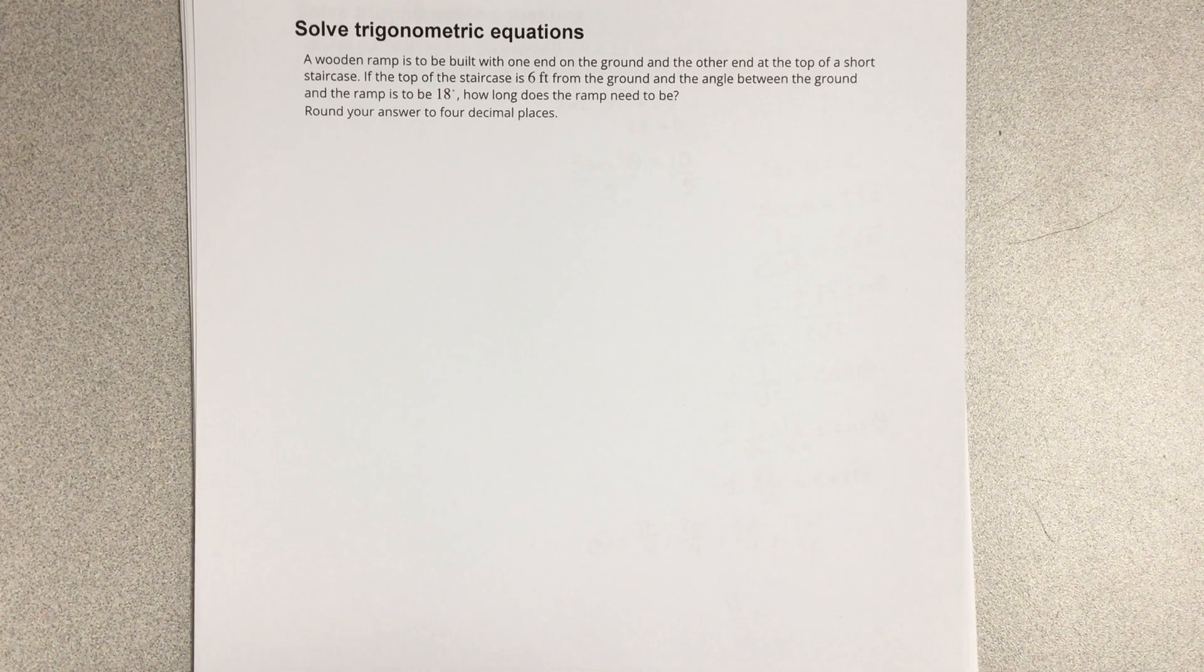A wooden ramp is to be built with one end on the ground and the other end at the top of a short staircase. If the top of the staircase is six feet from the ground and the angle between the ground and the ramp is to be 18 degrees, how long does the ramp need to be?